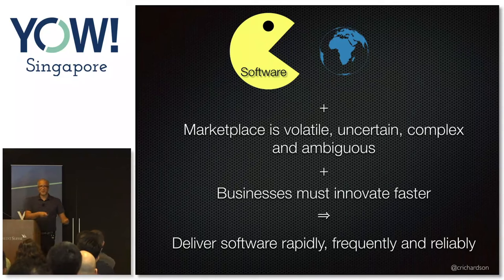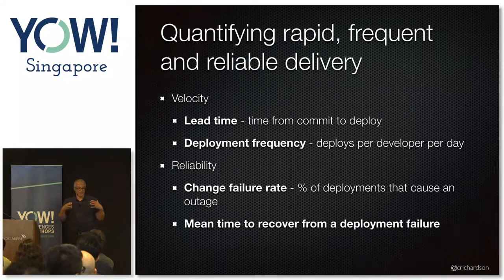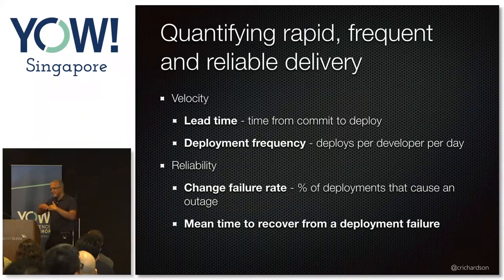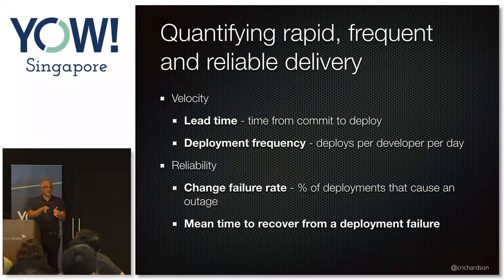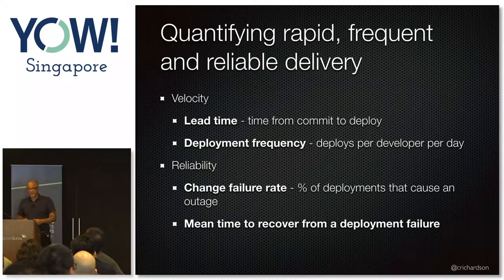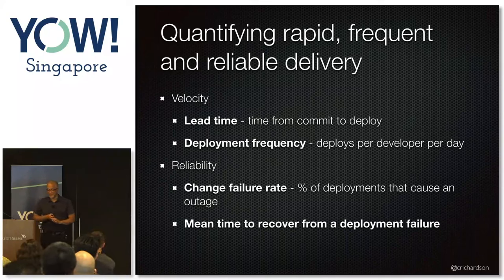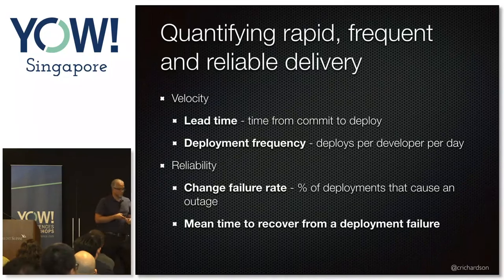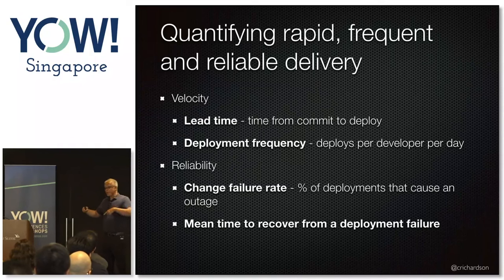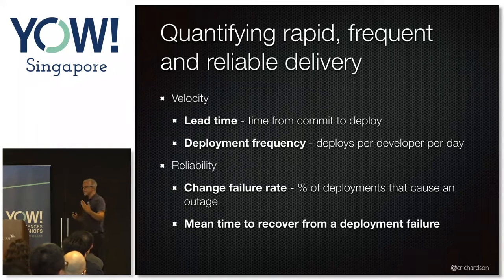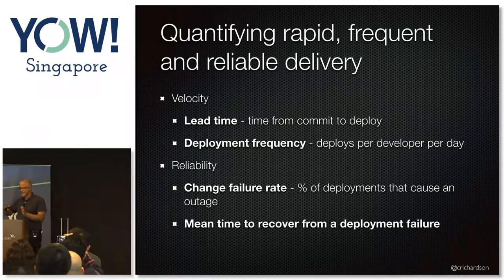You can quantify rapid, frequent, and reliable delivery with a few metrics. The first two concern velocity. One is lead time — minimizing the time from a developer committing a change to that change going into production. Today that should be measured in minutes, not hours, weeks, or months. You also want to increase deployment frequency, measured in deployments per developer per day. Every developer commits changes and those changes get built, tested, and deployed automatically.